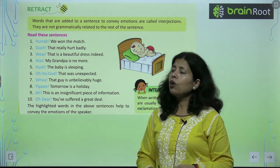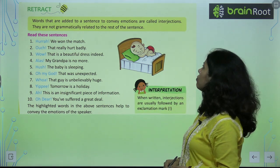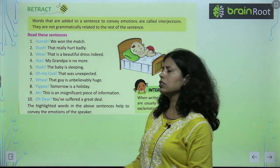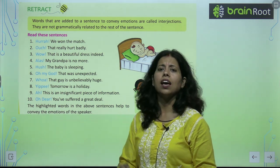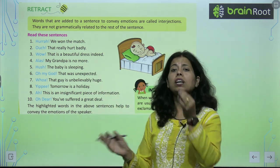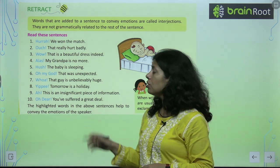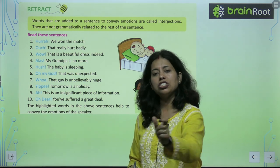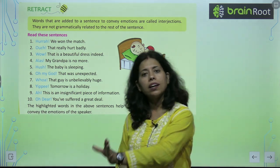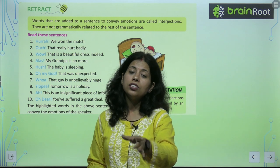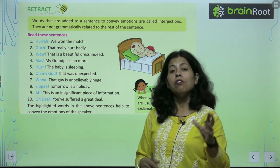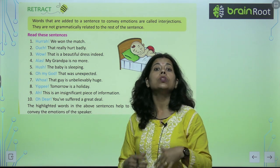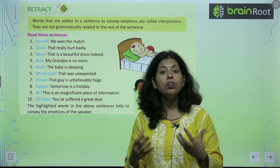Interjections are not grammatically related to the rest of the sentence. They don't connect grammatically — the rest of the sentence is a whole sentence on its own. We add an interjection to a sentence to show emotion. If you remove the interjection, the sentence is still correct. The interjection is added to show your feeling.